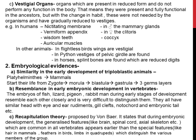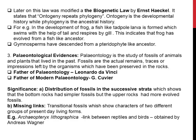This recapitulation theory was modified into a different version known as the biogenetic law or biogenetic theory. The modified version of this recapitulation theory — the biogenetic law — was given by Ernst Haeckel. What does this law state? It states that ontogeny repeats phylogeny. Ontogeny means the organism's own developmental history, and phylogeny means the developmental history of its ancestors.